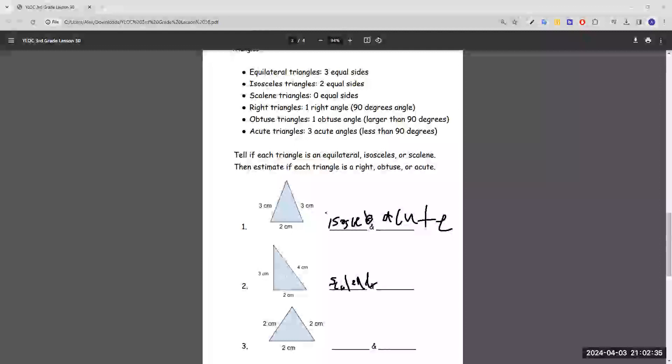And for the angle, you can see right here that this angle forms a perfect right angle. And we only need one right angle for the triangle to be considered a right triangle.